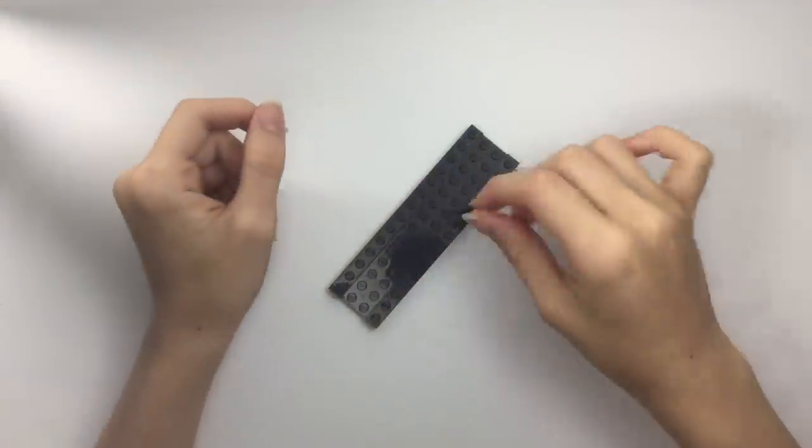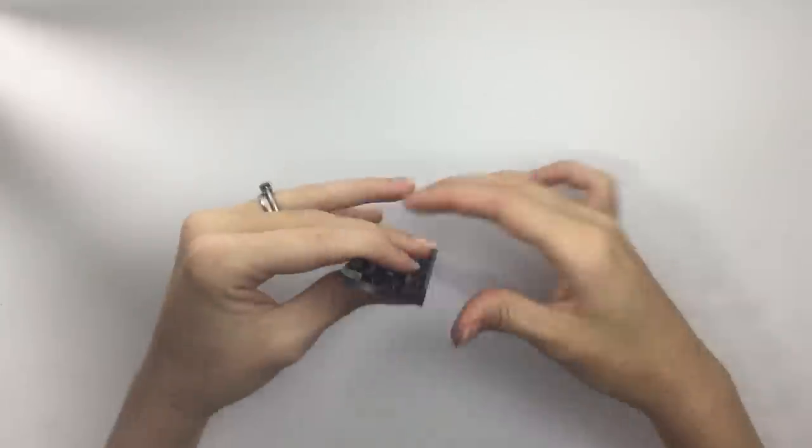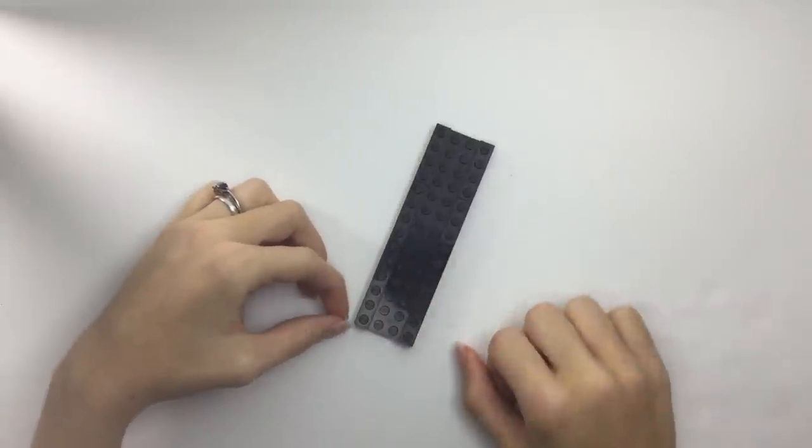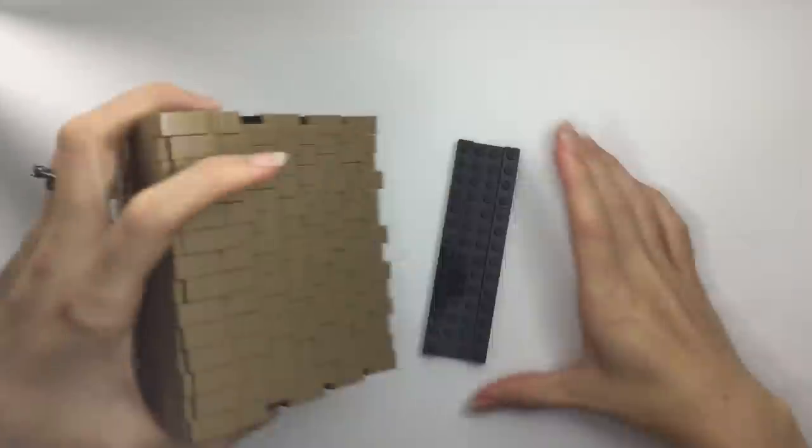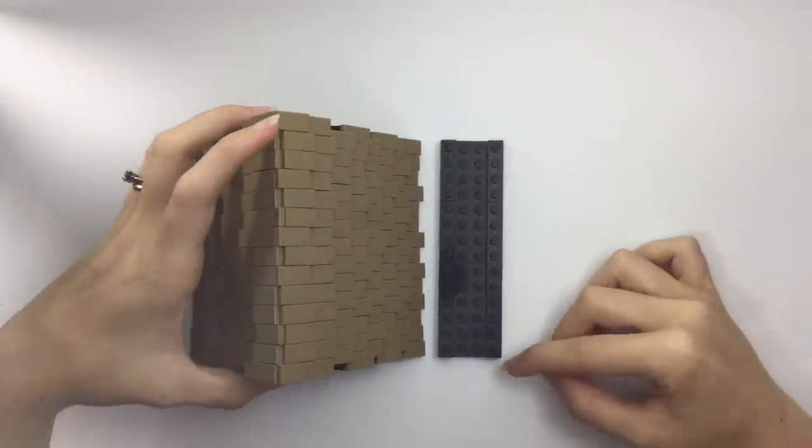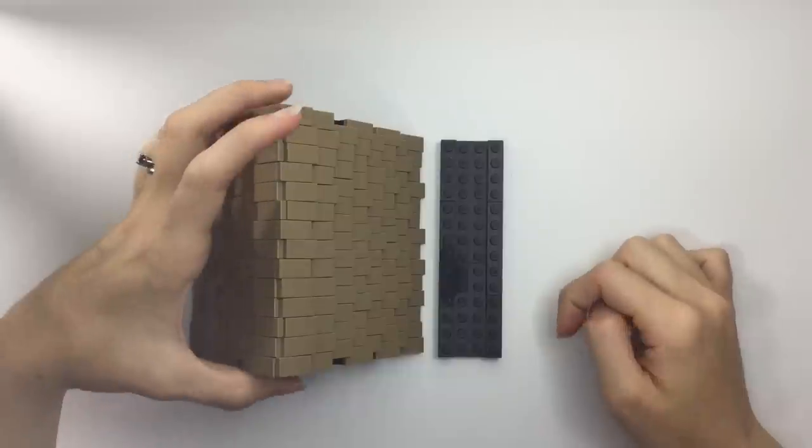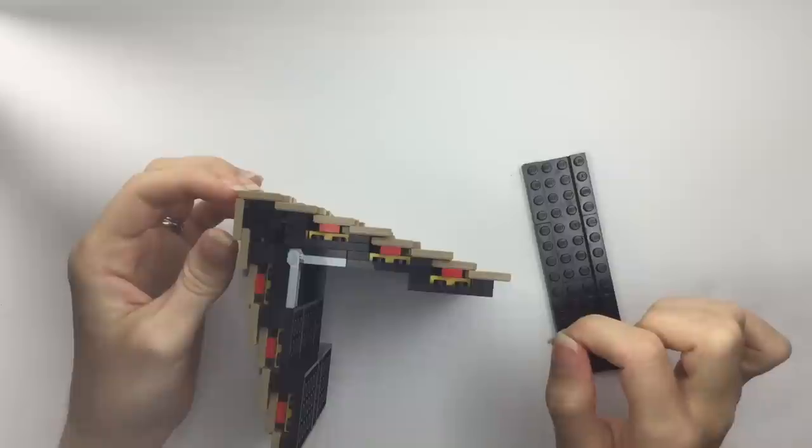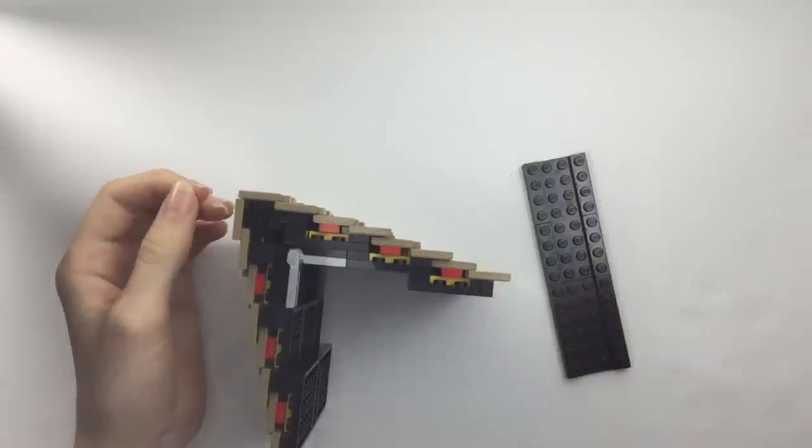The first thing you want to do is make these U-shaped troughs. They're going to be 4 studs by however wide you want your roof to be. In this case, it's 4 by 14 studs, and the number of troughs determines how high the roof is going to be. In this case, it's 3 troughs high.